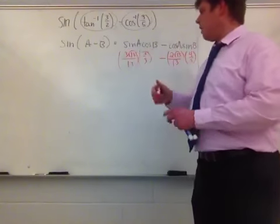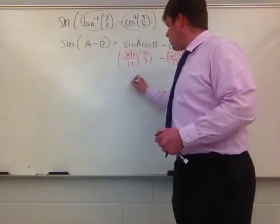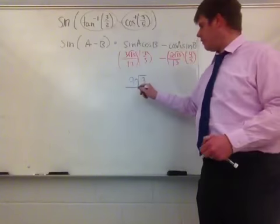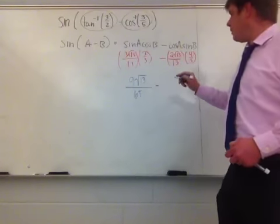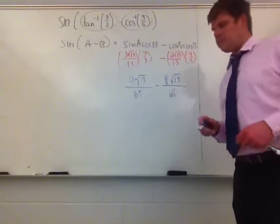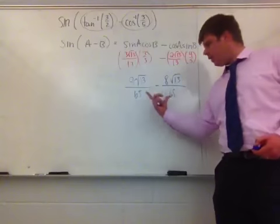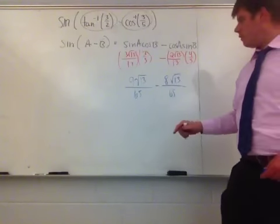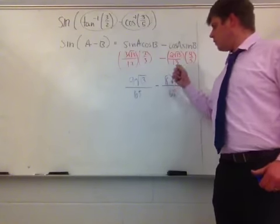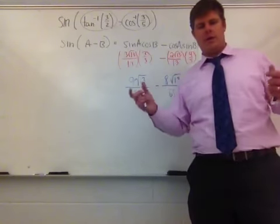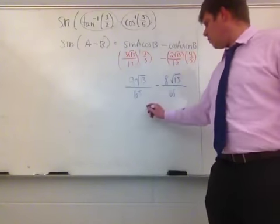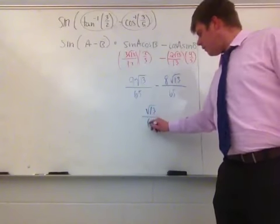So 3 root 13 times 3 is 9 root 13. So this becomes 9 root 13 all over, well, 5 times 13 is 65. So 9 root 13 minus, so in this case, I get 8 root 13 all over 65. So now I have like denominators that I'm going to simplify the numerators. So 9 root 13 minus 8 root 13. Well, I can do this because these roots are the same, so therefore I can subtract basically their coefficients of the root, which is a 9 and 8. So 9 minus 8 is 1, so I'm left with root 13 divided by 65.